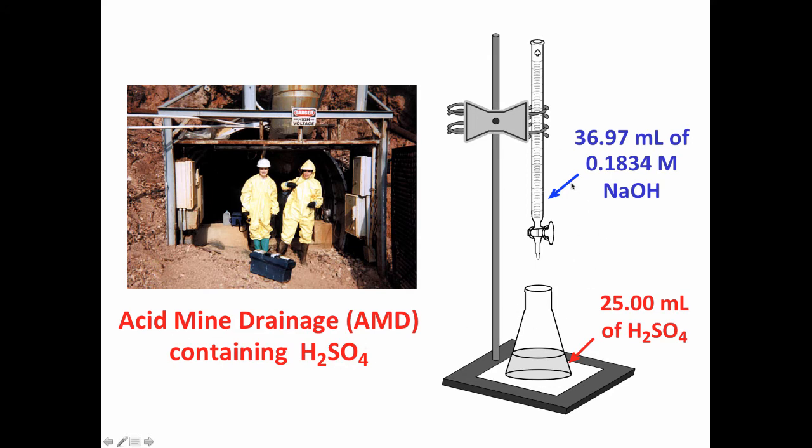Here is a picture of the apparatus. We have a 25 milliliter sample of sulfuric acid, 25.00 milliliters, because we've used a volumetric pipette to measure it very accurately. We titrate using the sodium hydroxide solution of known molarity, in this case 0.1834 molar. The sodium hydroxide solution has been standardized to know its concentration very accurately. And then it took 36.97 milliliters of this solution to neutralize the acid.